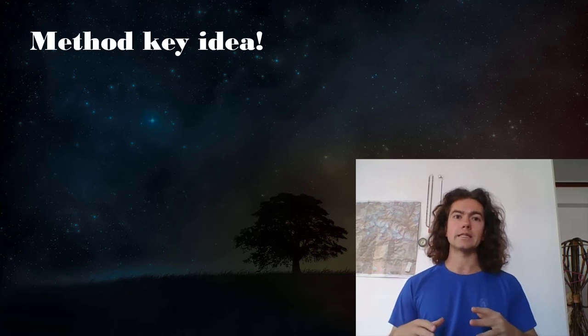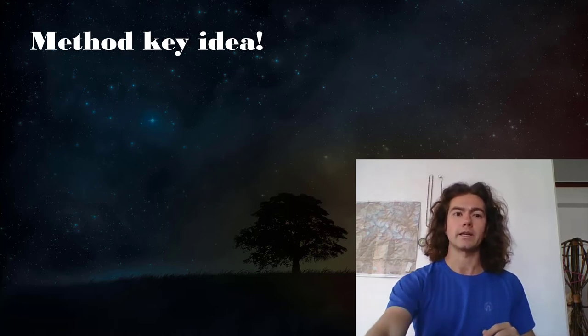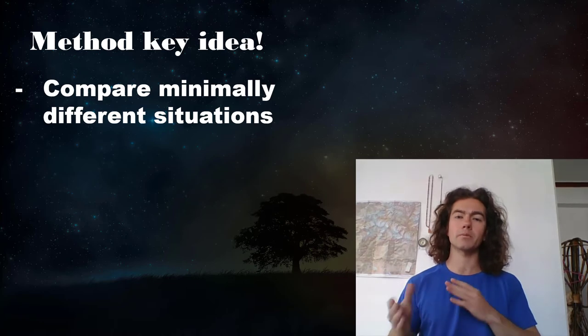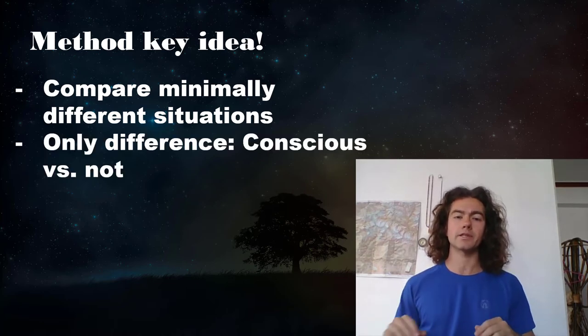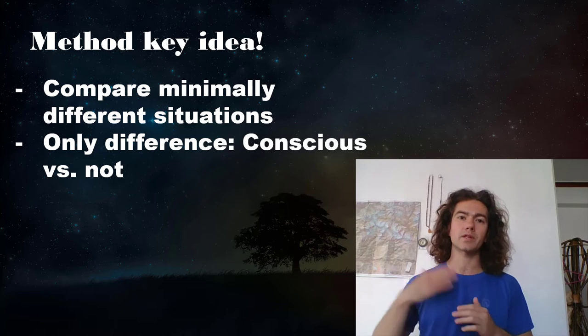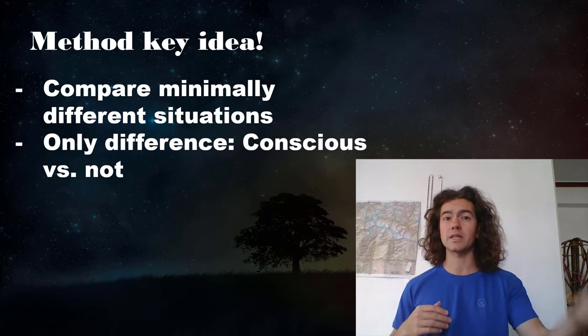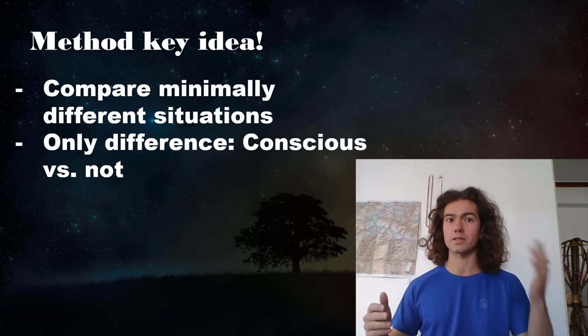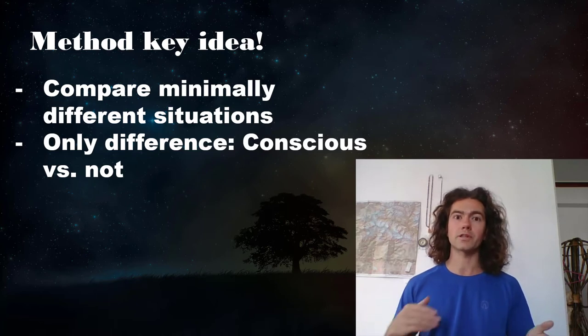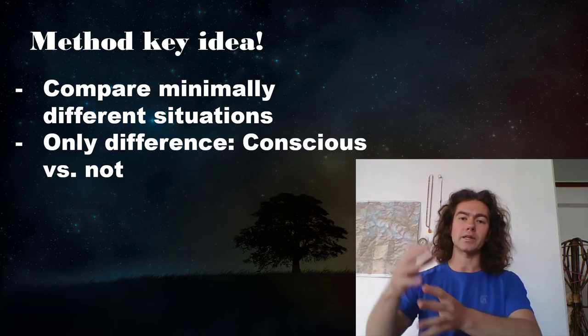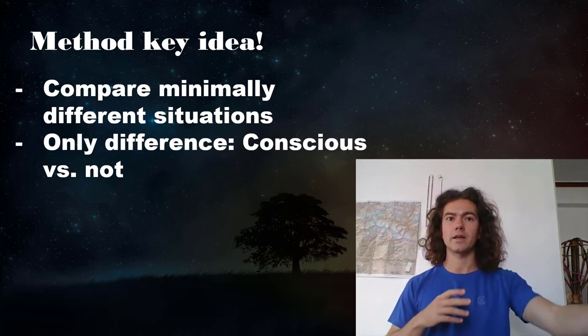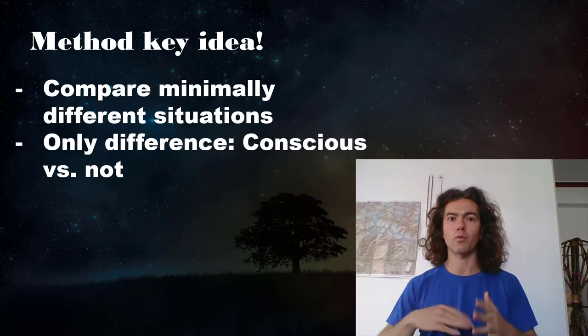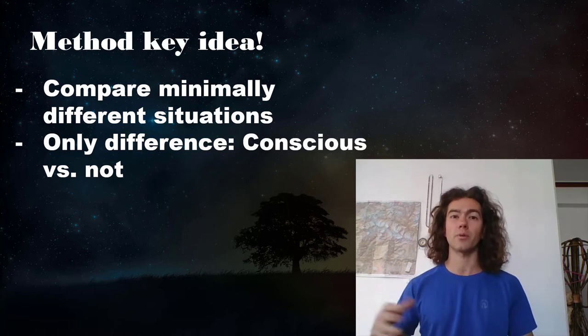So the method key idea for the study that we're going to be looking at today is to compare minimally different situations. The idea is to make the only difference be that sometimes a perceptual object or a stimulus is conscious and sometimes it's not conscious. And then comparing the difference between when it's conscious versus when it's not conscious, we can hopefully start to gain some kind of an appreciation for what's the difference between content that makes it into consciousness versus content that does not make it into consciousness. And where is that content that makes it into consciousness represented?